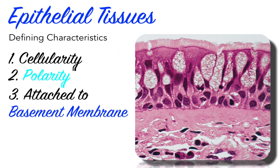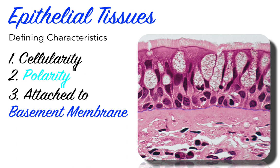Third, epithelial tissues are attached to an underlying connective tissue layer via a basement membrane. We will learn more about the basement membrane in our lessons on the integumentary system and discuss it further later in this lesson. Fourth, epithelial tissues are avascular. The prefix 'a' from the Greek means negation or without — that is to say, epithelial tissues lack blood vessels.